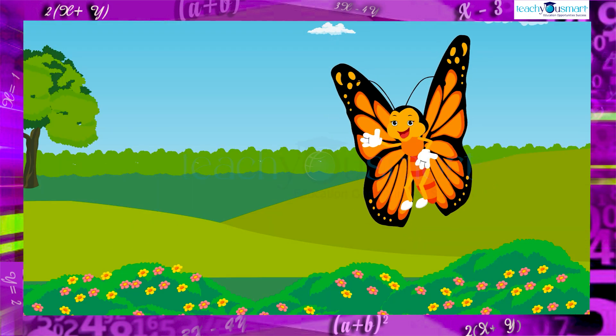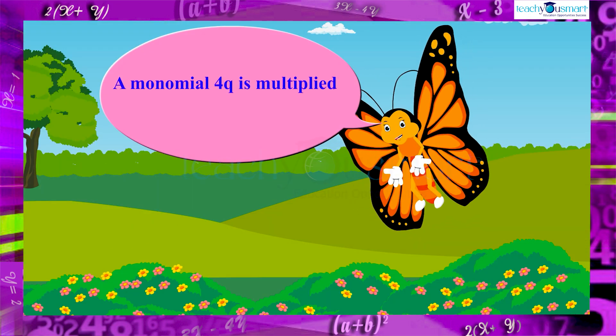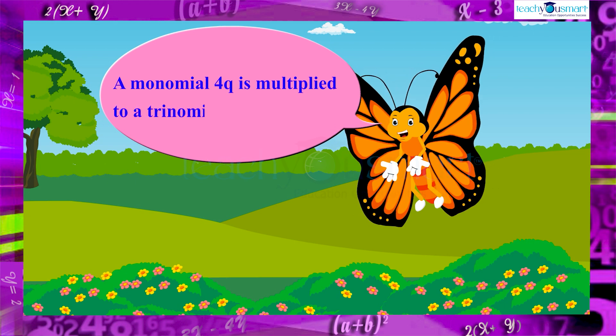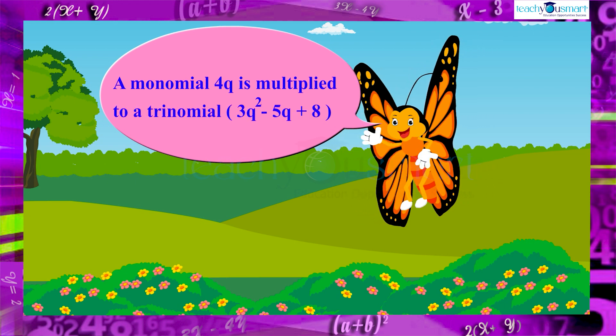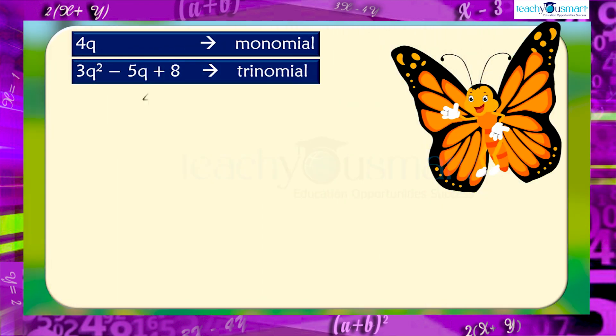Let's see, a monomial 4q is multiplied to a trinomial 3q² minus 5q plus 8. That is, 4q multiplied by 3q² minus 5q plus 8. Here also we use the distributive property.